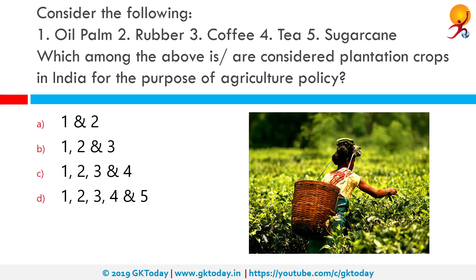Consider the following: one — oil palm, two — rubber, three — coffee, four — tea, five — sugarcane. Which among the above is considered plantation crops in India for the purpose of agricultural policy? The correct answer is the first four. Plantation crops are known as cash crops, mostly grown in tropical and subtropical areas, and grown for sale but not for local consumption. The major plantation crops in India include coconut, areca nut, oil palm, etc. However, sugarcane is not a part of it.